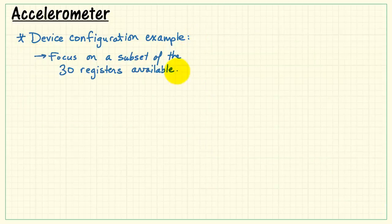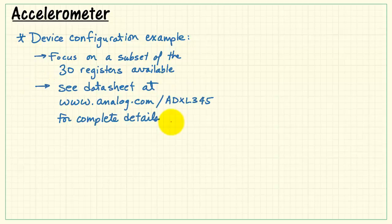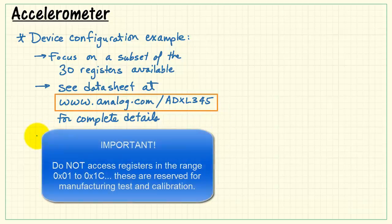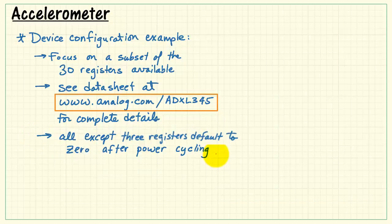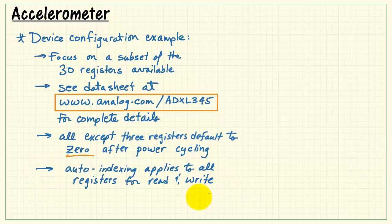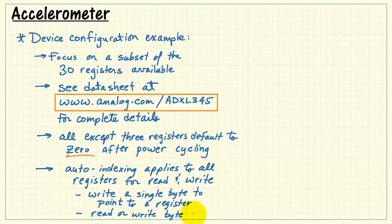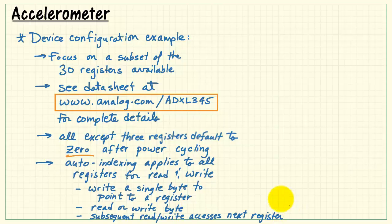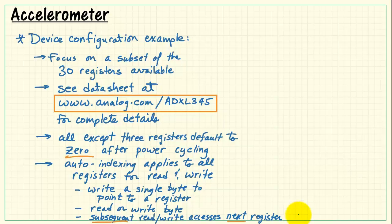All right, let's turn our attention to configuring the registers on board the accelerometer. I will focus on a subset of the 30 available registers and encourage you to see the full datasheet at Analog.com for complete details. When you're experimenting with a device, make sure that you never access these registers between address 1 and 1C. Now, all except three registers default to 0 after power cycling. Auto-indexing applies to all registers for read and write operations. And that means when you write a single byte to point to a particular register address, and then read or write that byte, then subsequent reads and writes will access the next register in order. All right, those are some general observations. Let's take a look at a specific, detailed example.